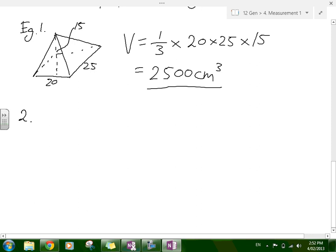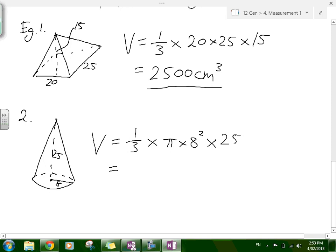The next one, let's say you have a cone with radius of 8 and perpendicular height of 25. The volume is one-third times the area of the base. The area of the circle is π times 8 squared, times the height, which is 25.